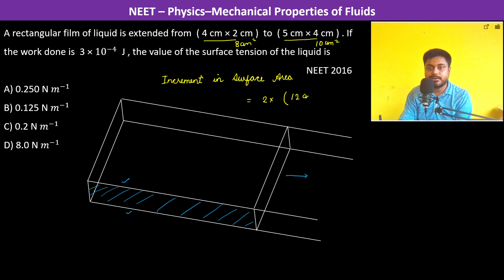2 into 12 centimeter, but this 5 into 4 is 20. So 2 into 12 centimeter square which is 24 centimeter square. That is the increment.